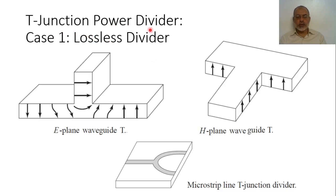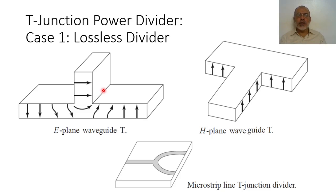Key Junction Power Dividers. In the previous videos, we studied the basic theory of power dividers, power combiners, and directional couplers. Now, starting from this lecture, we are going to apply what we have studied in the previous videos to practical power dividers and directional couplers. One of the simplest types of power dividers and power combiners is the T-junction.